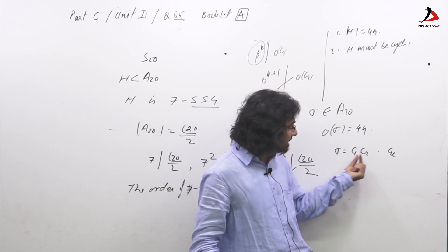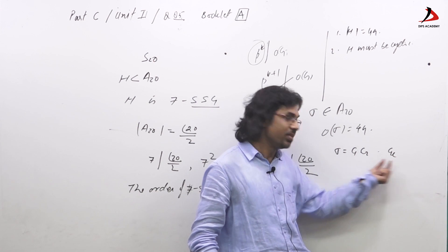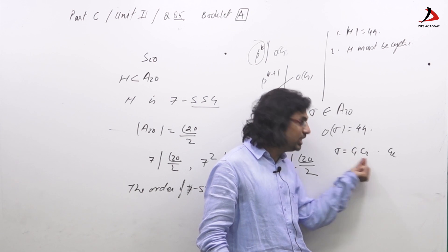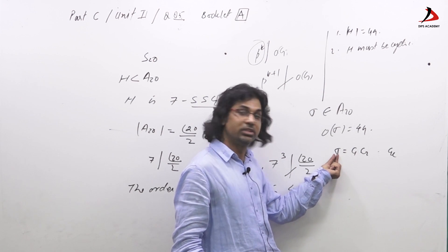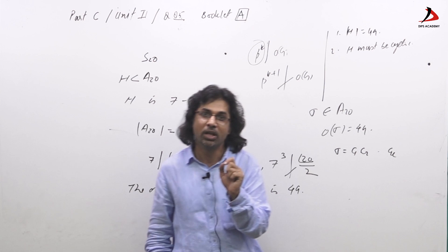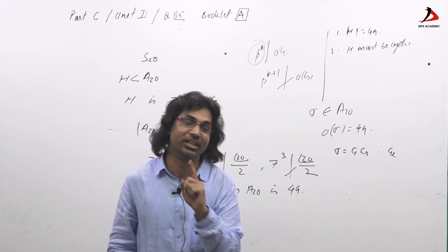What is order of permutation? If sigma is C1, C2...CK, then the LCM of this length where C1, C2...CK are disjoint cycles, then the LCM of the length of this is order of sigma. So to get 49 as LCM, one of the numbers has to be 49.